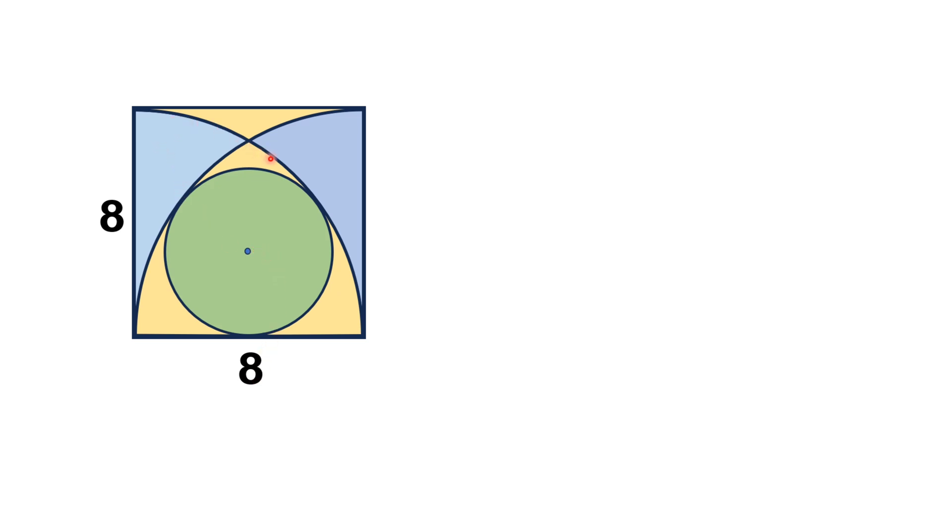There are inscribed two quarter circles in this square, each having radius equal to the side of the square, that is 8 units. And the intersecting part of these quarter circles contains a circle inside it.